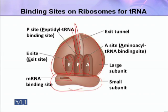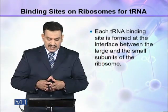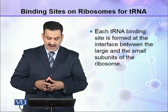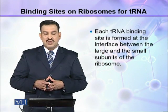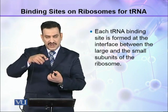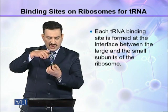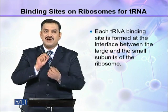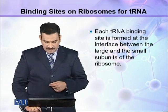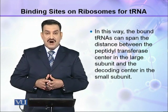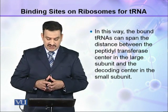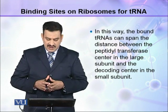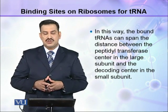تو یہ جو ہے یہ ایک structure ہے ایک ribosome کا۔ Each tRNA binding site is formed at the interface between the large and the small sub-units of the ribosome. تو یہ جو tRNA binding site ہے، یہ بھی ribosome کے large sub-unit اور small sub-unit کے interface پر ہے، جہاں پہ ان کا interface ہے، جہاں سے یہ bind کرتے ہیں، یہاں پہ یہ tRNA کی binding site ہے۔ In this way the bound tRNAs can span the distance between the peptidyl transferase center in the large sub-unit and the decoding center in the small sub-unit.